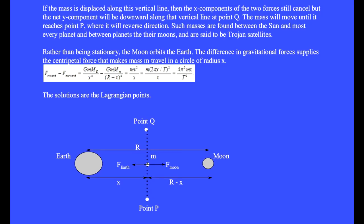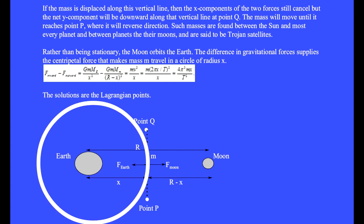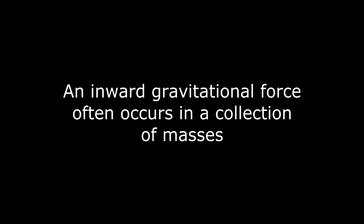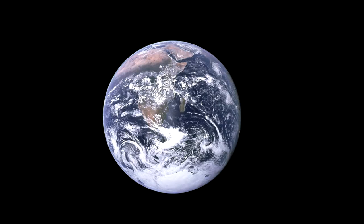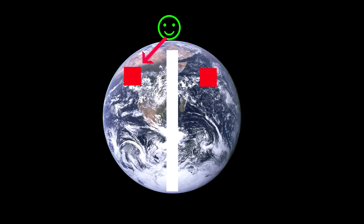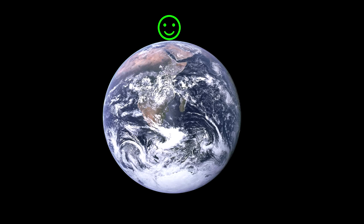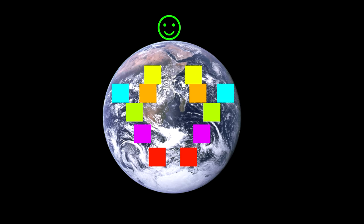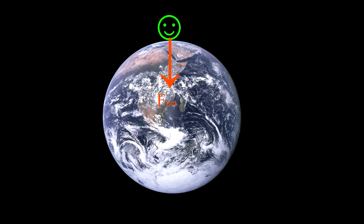Rather than being stationary, the Moon orbits the Earth. The difference between the gravitational forces of the Moon and the Earth provide the centripetal force to make the mass move in a circular orbit. The Earth is a sphere of material all of which puts a gravitational force on a person. Deep within the Earth, a piece of mass puts an attractive force pointing in one direction, and an identical amount of mass placed symmetrically on the other side puts a force in the opposite direction. The vector sum of these two forces produces a net force pointing straight toward the center of the Earth, so the net gravitational force of all Earth's material pulls a person straight toward the center.